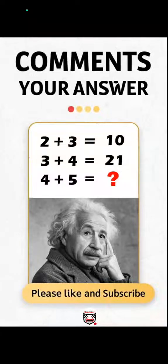3 plus 4 equals 21. 4 plus 5 equals question mark. And right now the top answer floating around is 36, and the logic seems pretty solid. You simply add the two numbers, then multiply the result by the first number.